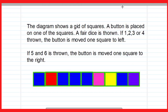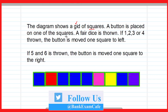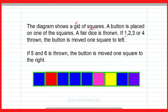Now let us move to the question. The diagram shows a grid of squares. A button is placed on one of the squares. A fair dice is thrown. If one, two, three, or four is thrown, then the button is moved one square to the left. And if five or six is thrown, the button is moved one square to the right.